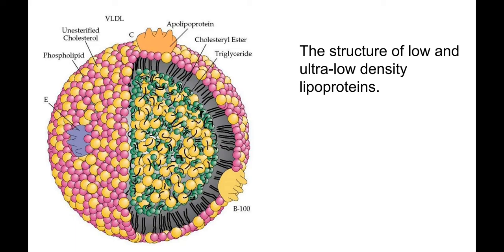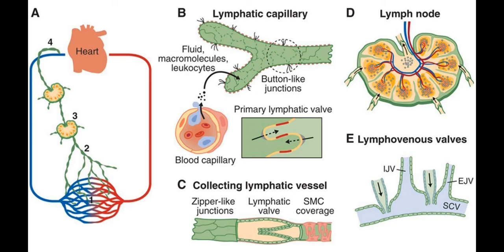Without enough cholesterol from food or produced in the body, your body accumulates toxins and eventually gets sick. The lipoprotein vessel first goes to lymph, passes through lymph nodes where it is cleaned and toxins are removed, then enters the blood, reaches the heart, mixes with blood and circulates throughout the body.